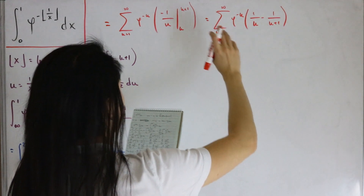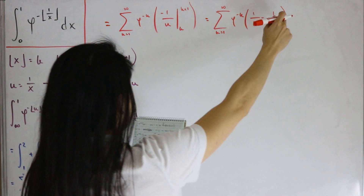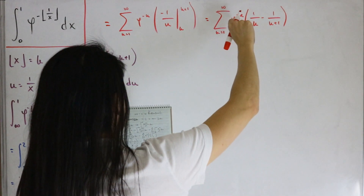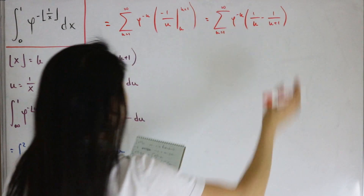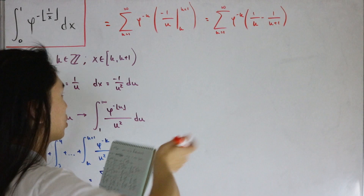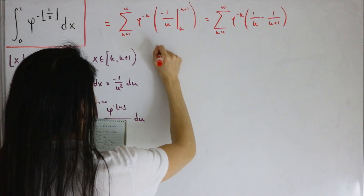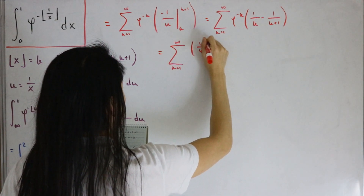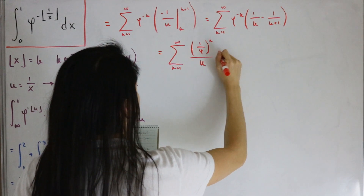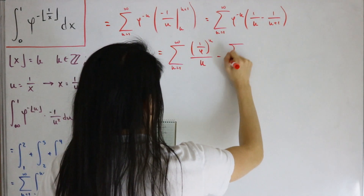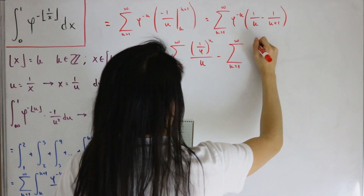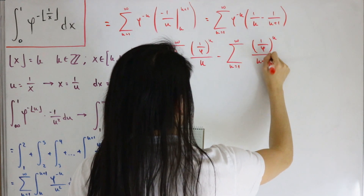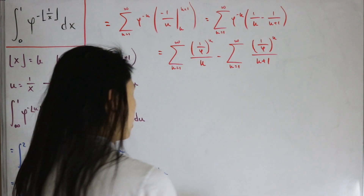Now we distribute φ^(-k) to both terms and apply linearity to the sums. We also rewrite φ^(-k) as (1/φ)^k. This gives us two sums: the infinite sum from k=1 to infinity of (1/φ)^k / k, minus the infinite sum from k=1 to infinity of (1/φ)^k / (k+1).